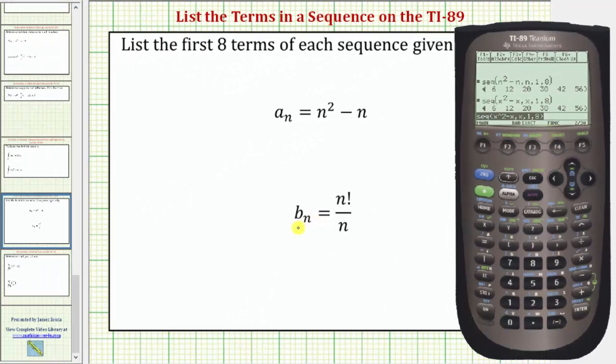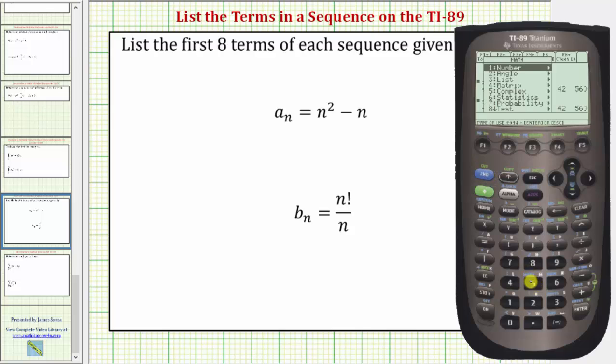Let's go back down and now let's find the first eight terms of b sub n. So let's go ahead and clear this. So now we'll press second and five for math, number three for list, and number one for sequence.